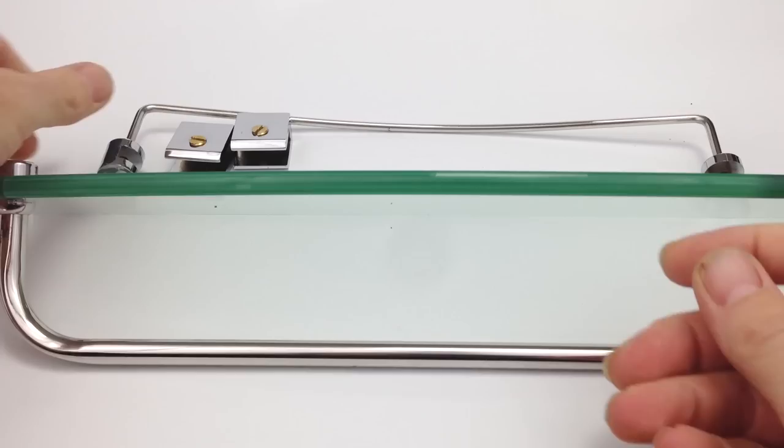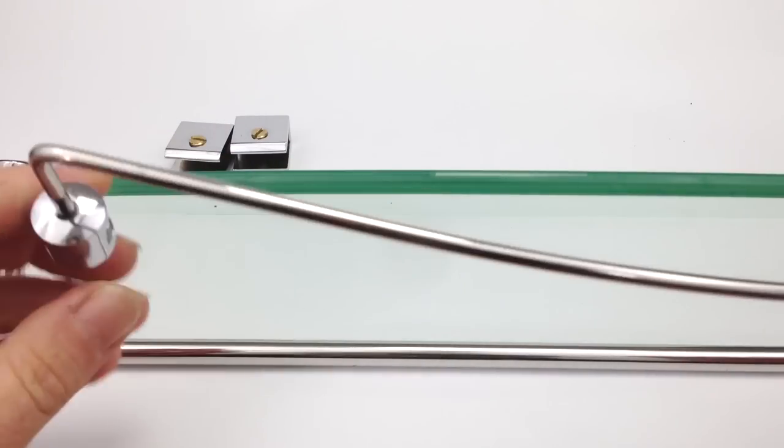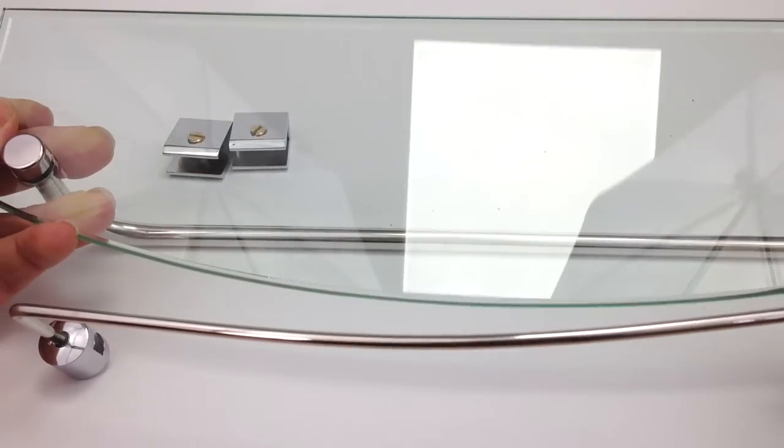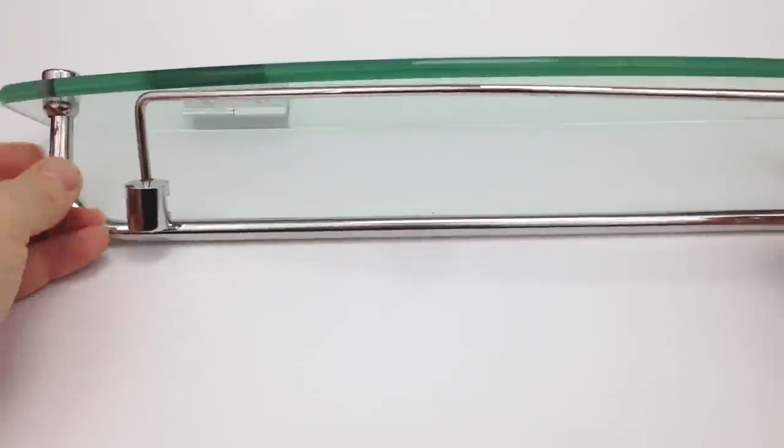The final assembly part: take the thinner upper curved rail and make sure the curve follows the front curvature of the glass. Position the rail central over the front edge.